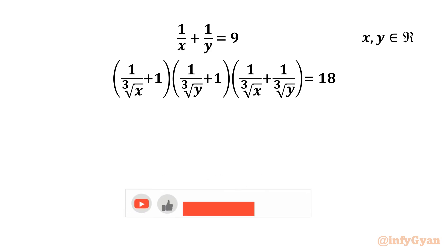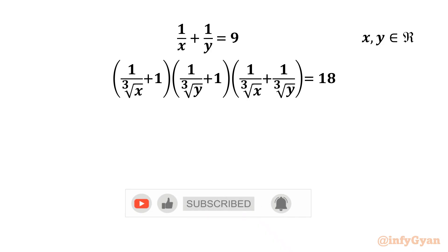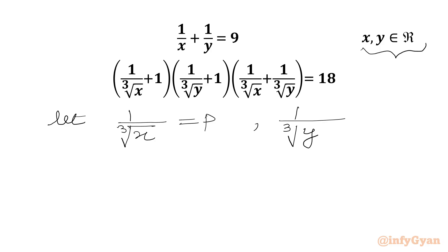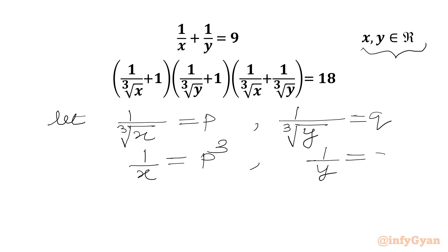Welcome to Infigyan friends. Today in this video we will be solving one very interesting and challenging question from system of equations for the real values of x and y. Let us get started by considering our substitution straight away. I will consider 1 over cube root x equal to p and 1 over cube root y equal to q. Taking cubing both sides, 1 over x equals p cube and 1 over y equals q cube.